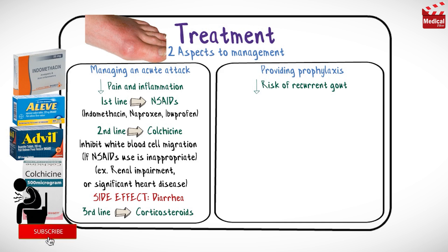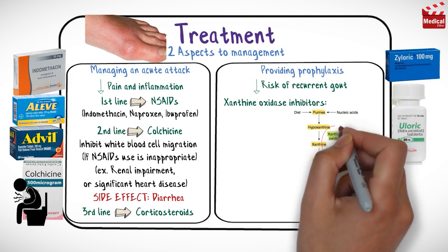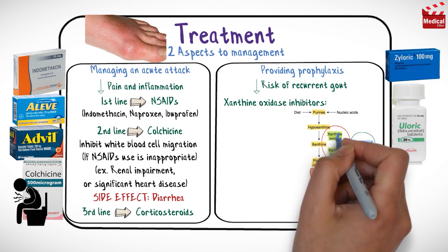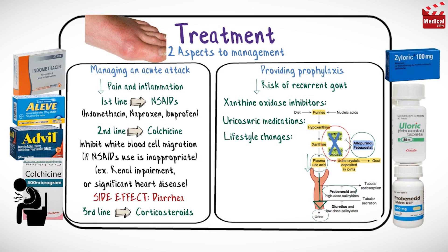The second aspect of management is prophylaxis by decreasing uric acid levels in the blood. There are two categories of medications: first, xanthine oxidase inhibitors such as allopurinol and febuxostat — since xanthine oxidase is the enzyme involved in the breakdown of purines to uric acid, inhibiting it results in less uric acid production. Allopurinol prophylaxis shouldn't be initiated until after the acute attack has settled, but once started it can be continued during an acute attack. The second category is uricosuric medications such as probenecid, which increase excretion of uric acid by the kidneys. Lifestyle changes are also important: losing weight, staying well hydrated, reducing or eliminating soda, and minimizing the consumption of alcohol and purine-rich foods.